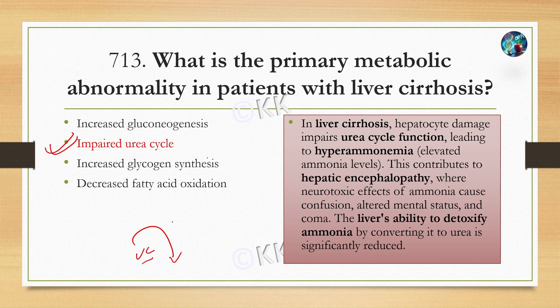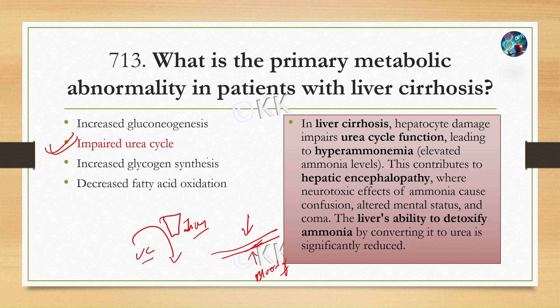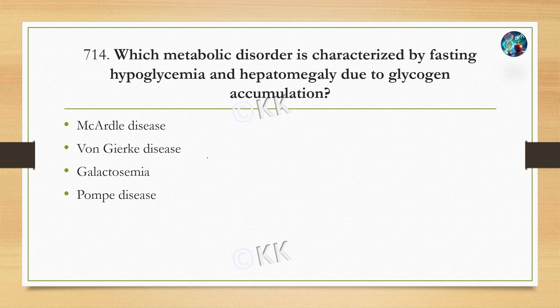In liver cirrhosis, the hepatocytes — the liver's cells — are damaged, leading to impaired urea cycle function and hyperammonemia, meaning elevated ammonia levels in the blood. This contributes to hepatic encephalopathy, where the neurotoxic effect of ammonia causes confusion, altered mental status, and may lead to coma. The liver's ability to detoxify ammonia by converting it to urea is significantly reduced.